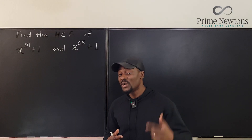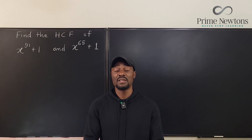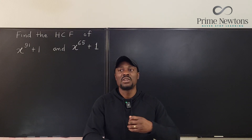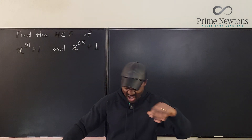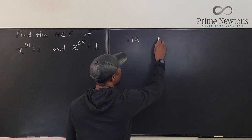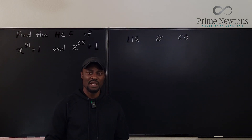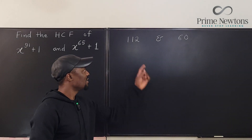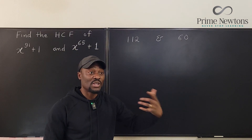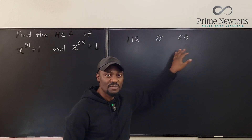So what exactly does the Euclidean algorithm ask you to do? It says: if you're given any two numbers and you're trying to find the highest common factor, pick two numbers — let's say 112 and 60. The algorithm says: look at the two numbers and write one number in terms of the other.